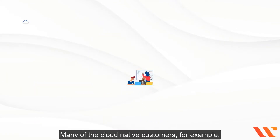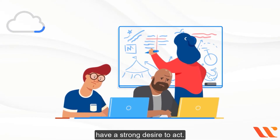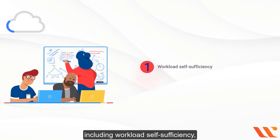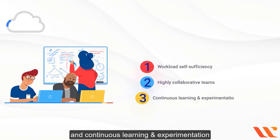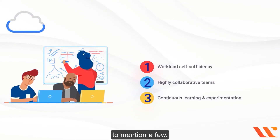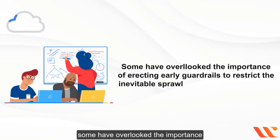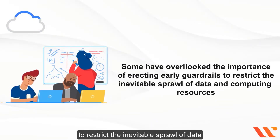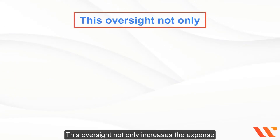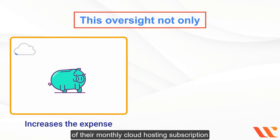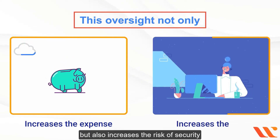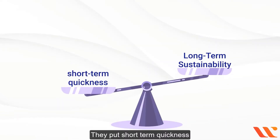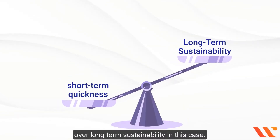You can see two sorts of company cultures play out again and again. Many cloud-native customers, for example, have a strong desire to act. They excel at workload self-sufficiency, highly collaborative teams, and continuous learning and experimentation. However, in the haste to move forward, some have overlooked the importance of erecting early guardrails to restrict the inevitable sprawl of data and computing resources.